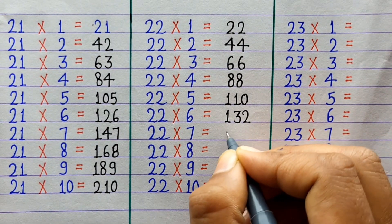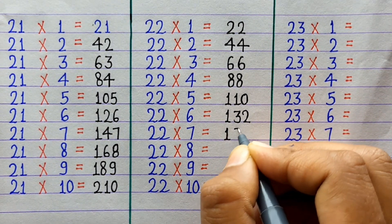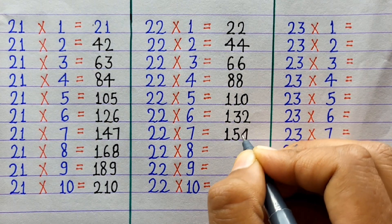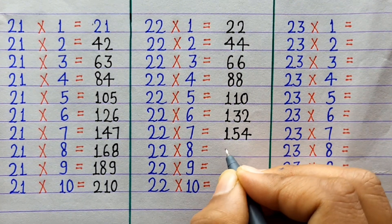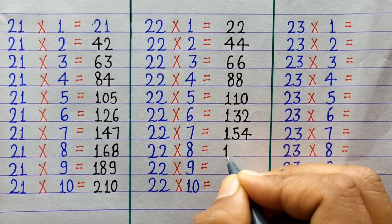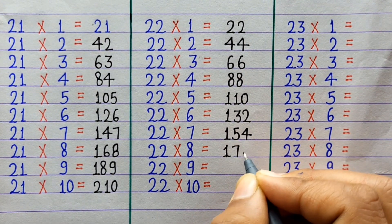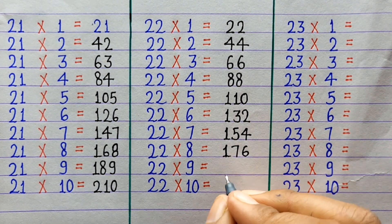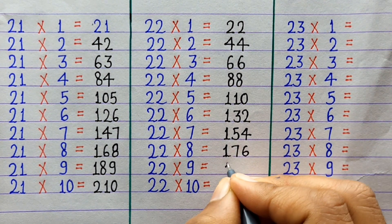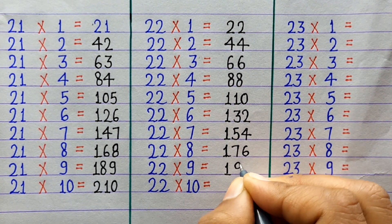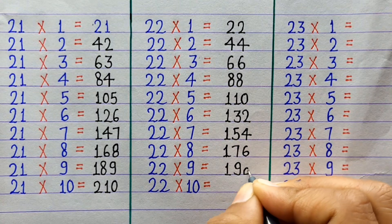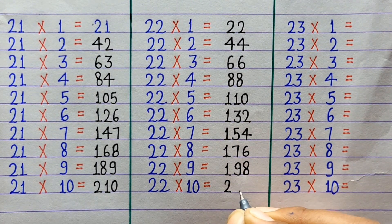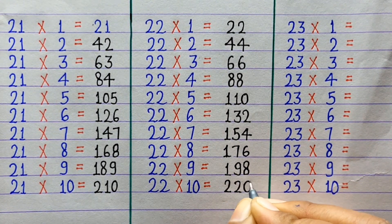22×7=154, 22×8=176, 22×9=198, 22×10=220.